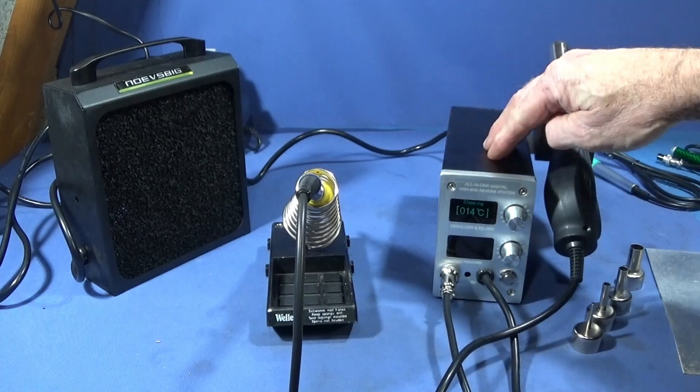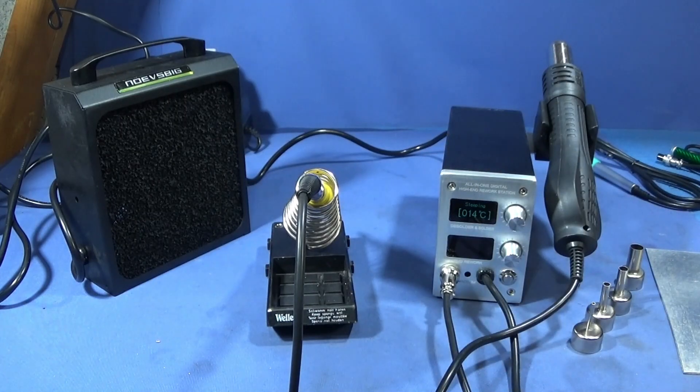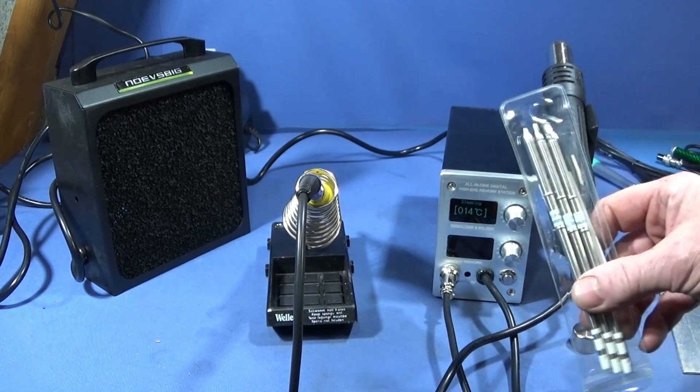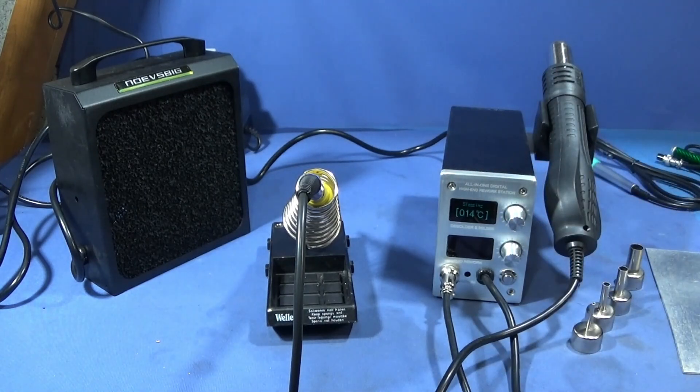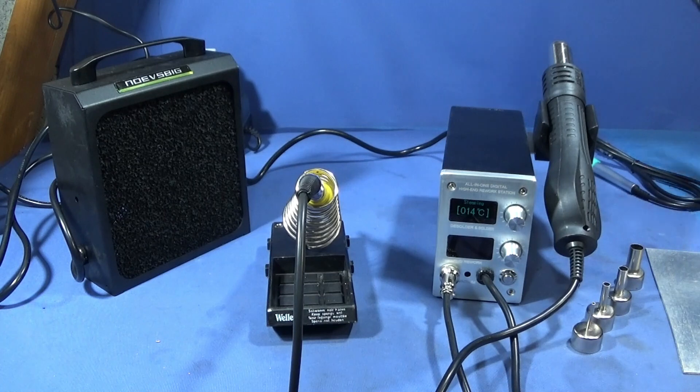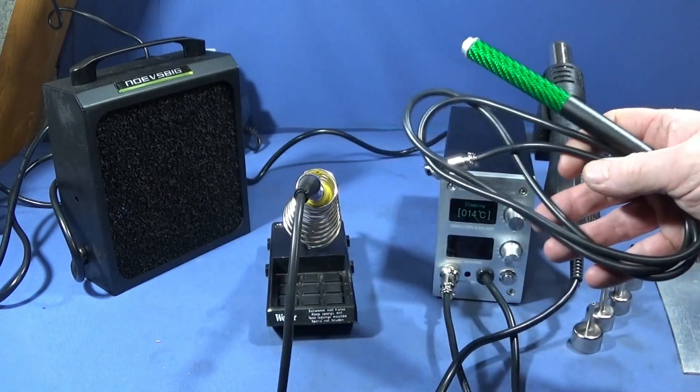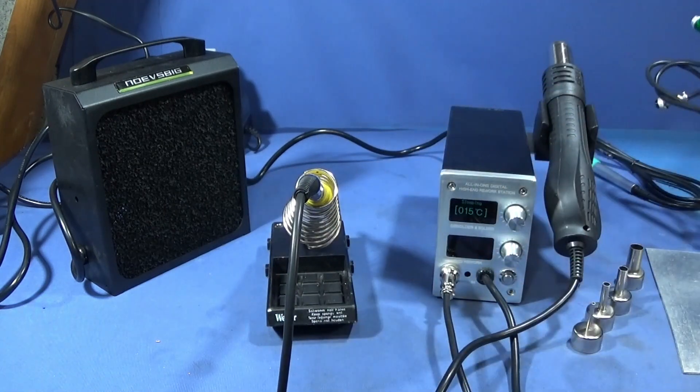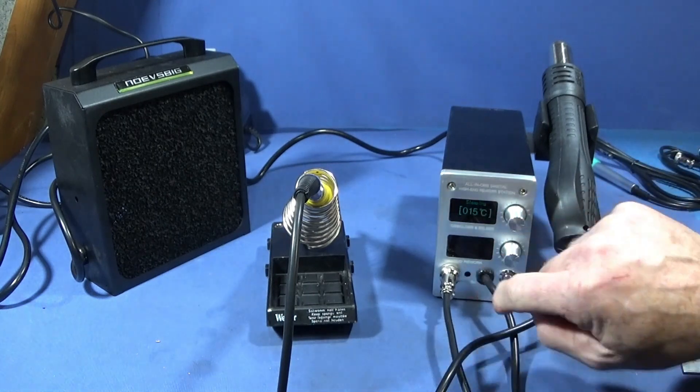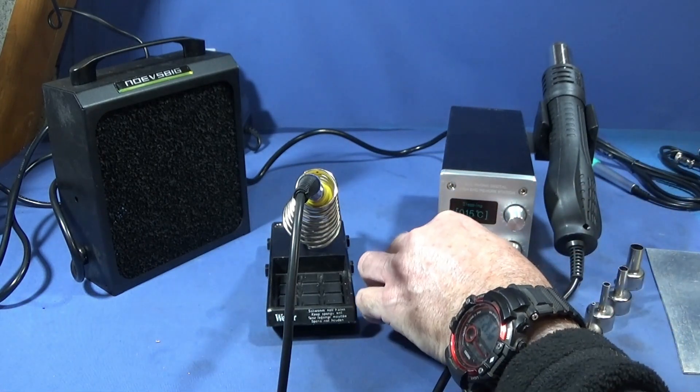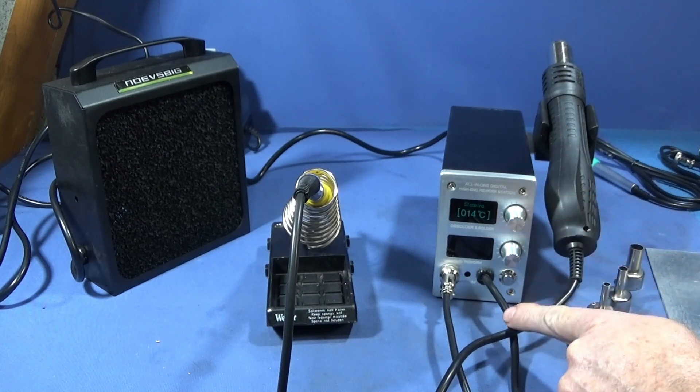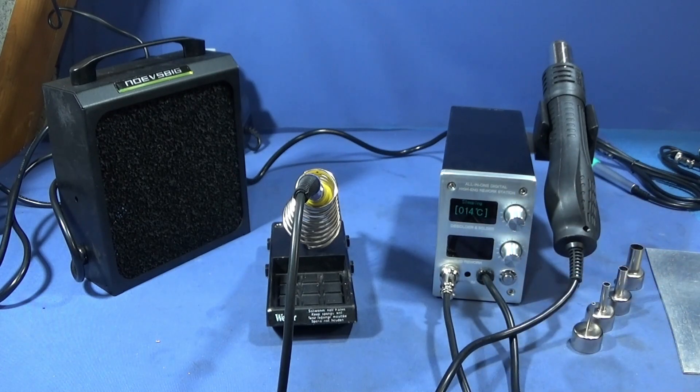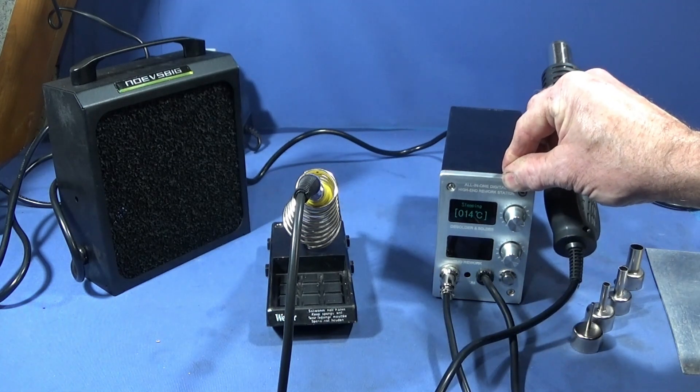They say it's one of the best rework stations on the market because you can get about 90 different tips for the soldering iron. You can get all different types of soldering irons with a five pin plug assembly and screw on collar. The rework heat gun is permanently fixed to the unit and the whole unit is fully programmable.